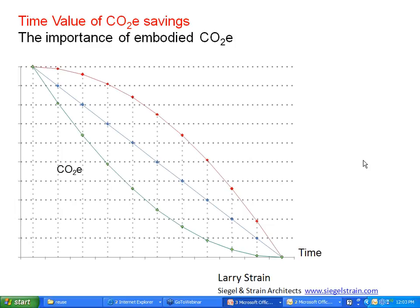Larry Strain is an architect, a Fellow of the AIA, and also a LEED AP. He was a founding principal of Siegel & Strain Architects in Emeryville. In the past decade, Siegel & Strain has received more than 60 awards for design, historic preservation, and sustainable design, including four AIA Committee on the Environment top 10 awards. Larry was also author of the groundbreaking publication Resourceful Specifications, the 1998 winner of an AIA Award for Practice and Technology. His more recent research has focused on net-zero building and carbon sequestration.